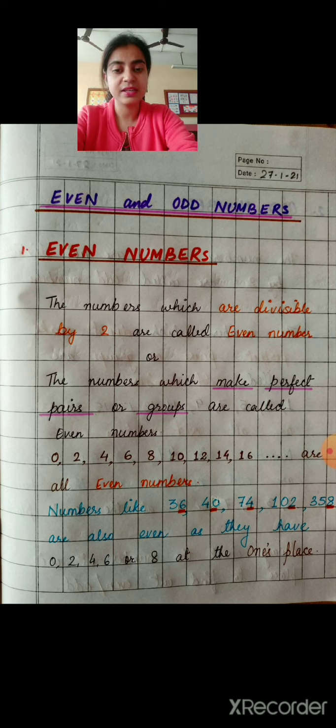Also, numbers like 36, 40, 74, 102, 358 and other bigger numbers which have 0, 2, 4, 6 or 8 at the once place are even numbers.